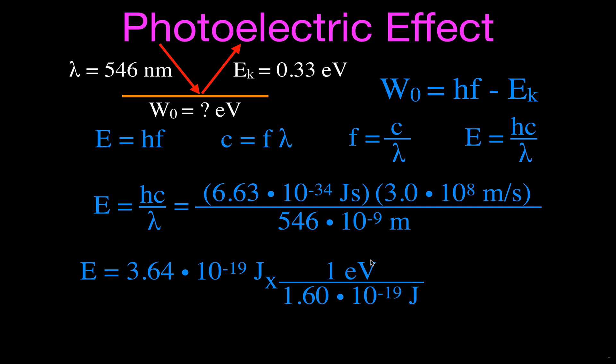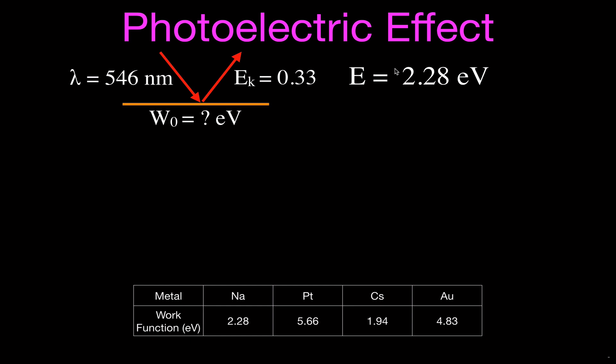So, that joules cancel. We're left with electron volts, and that's 2.28 electron volts. That is the energy contained within that light. So, we are going to say that the energy is 2.28 electron volts.